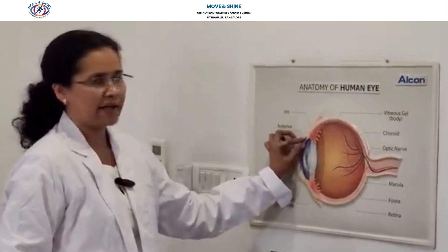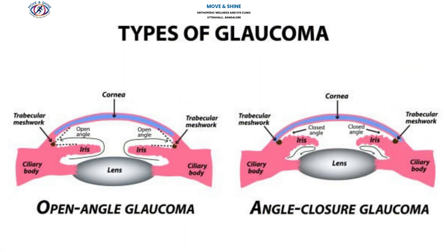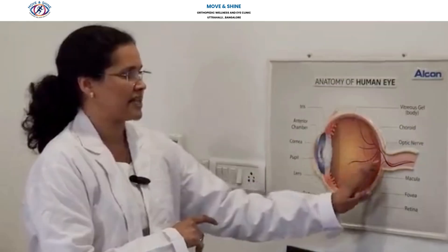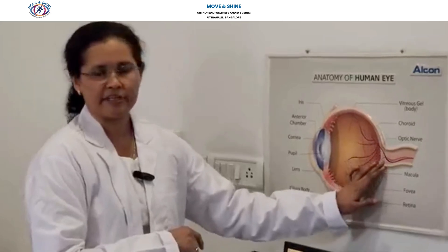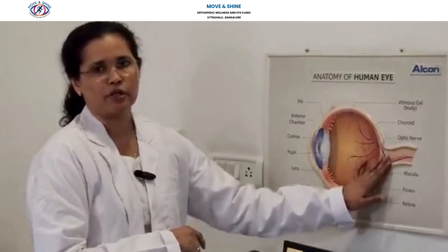If the angle is narrower than normal, that is called narrow angle glaucoma. The other type is called open angle glaucoma, where the angle is open. If the angle is narrow, the aqueous will not drain properly, the eye pressure will build up, and with time it will affect the nerve of the eye. When the nerve gets affected, we call it glaucoma.